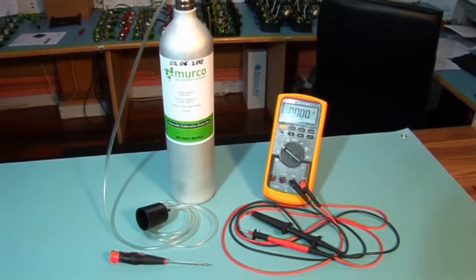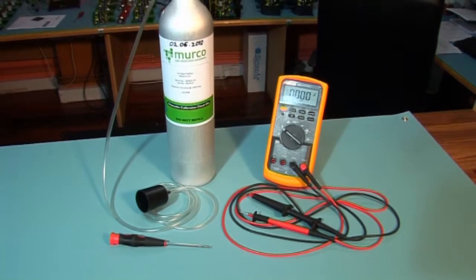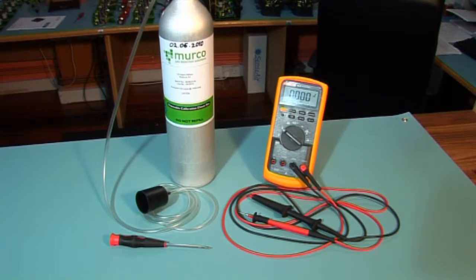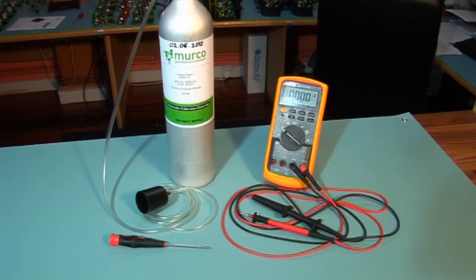The tools required are a digital voltmeter with a resolution to two decimal places, crocodile clips, flat-headed screwdriver, and a Murco calibration kit which includes your cylinder of calibration gas, flow regulator, flexible non-absorbent tubing, and a vented calibration hood.